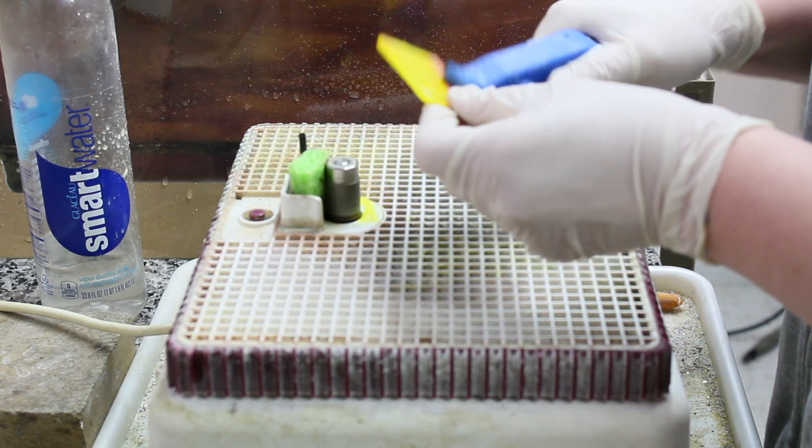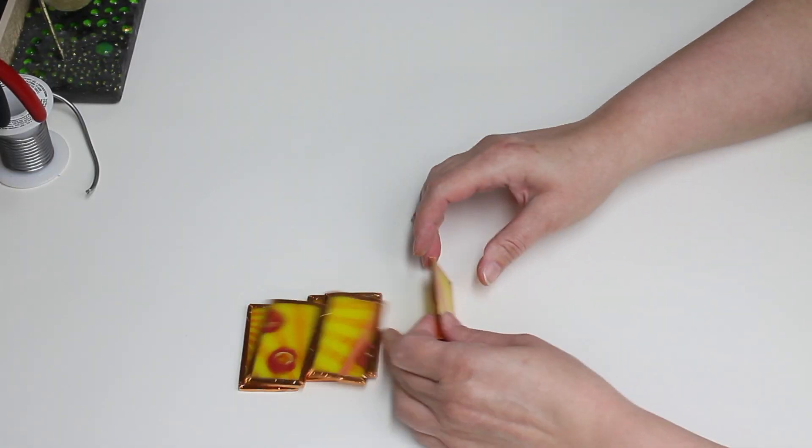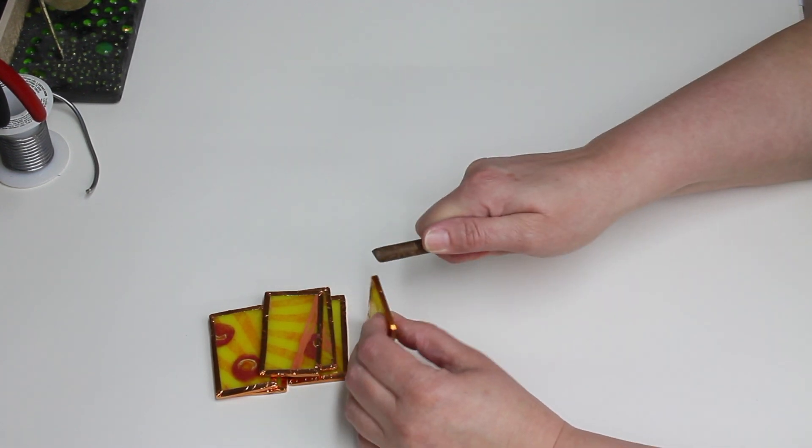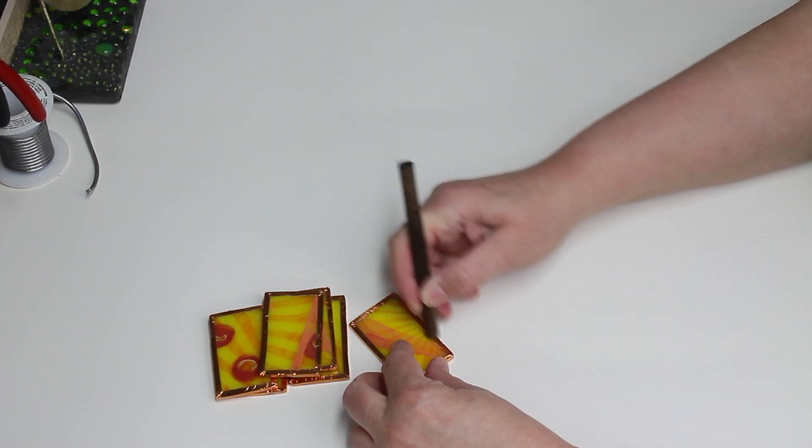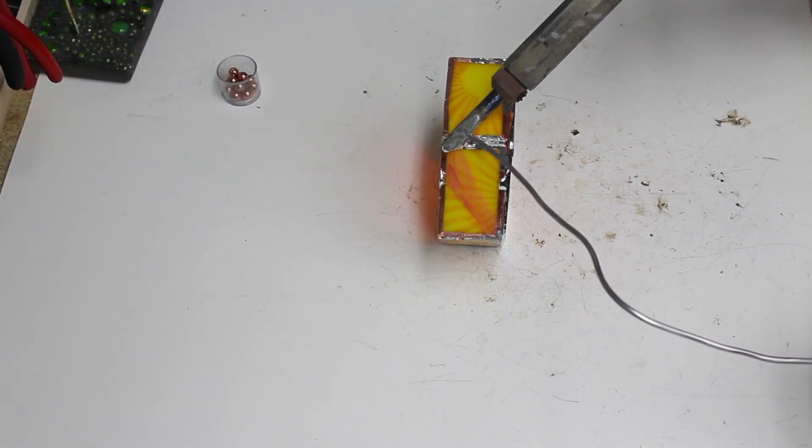Grinding is my least favorite part. But wait, there's more—we have to foil each and every piece of glass. Now we can get down to the Zen of soldering. This is the longest part of my process.